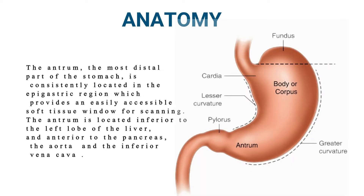The stomach has five distinct sections, out of which the gastric antrum is of particular interest as it is easily identifiable on ultrasound in the epigastric region. The gastric antrum lies posterior and inferior to the medial margin of the left lobe of the liver, and anterior to the pancreas and aorta.